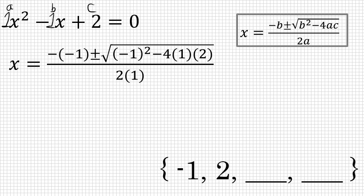Substituting those values in for a, b, and c in the quadratic formula yields x equals negative, the opposite of negative 1, b plus or minus the square root of, again, b negative 1 squared minus 4ac, which is 4 times 1 times 2, in this case, all over 2a, all over 2 times 1.